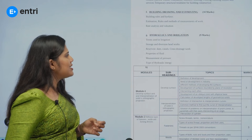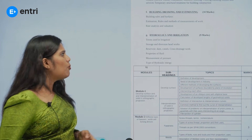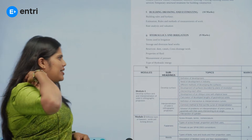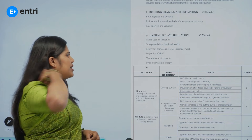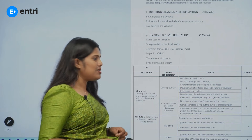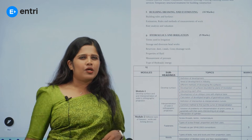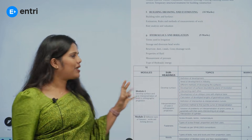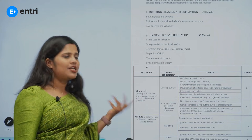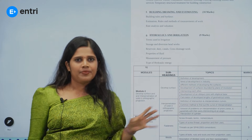Hydraulics and Irrigation carries 9 marks. Topics include irrigation, storage and diversion, headworks, reservoir, dam, canal, cross drainage work, fluid mechanics, properties of fluid, pressure, and hydraulic energy.